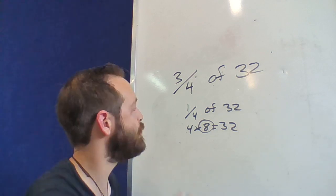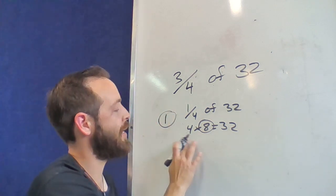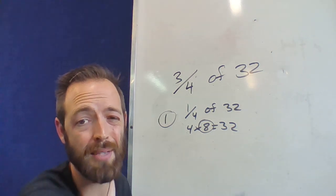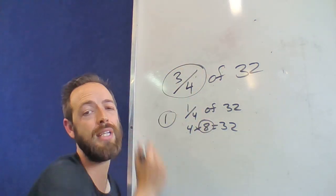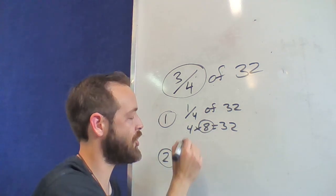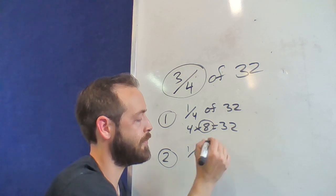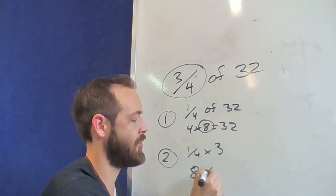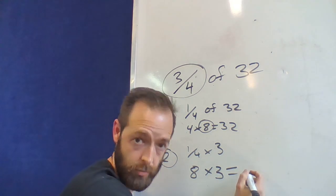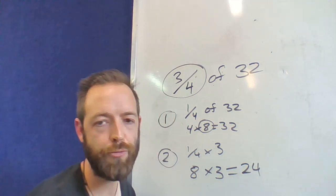So that's the important step one, and sometimes people then record that as their answer, but it didn't want to know one quarter, we needed three quarters. So step two is going to be then just multiplying that one quarter by 3. In this case that is 8 times 3 equals, correct? 24.